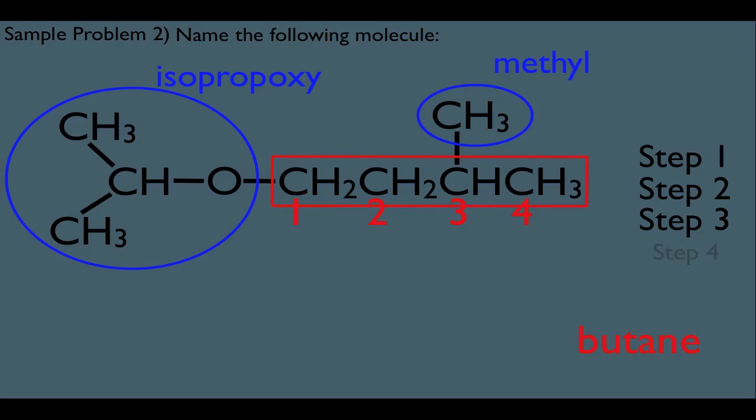So that gets us ready here for step four. Let's put this all together. In alphabetical order, we should list the isopropoxy first. So we have one isopropoxy. And then we have three methyl and then butane.